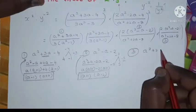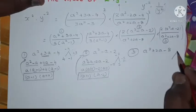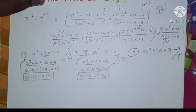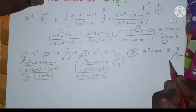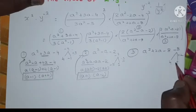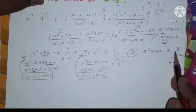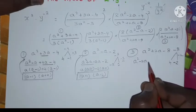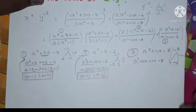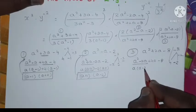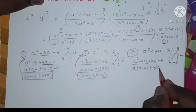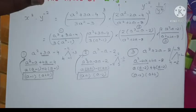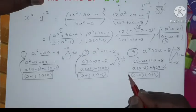The third polynomial is a² + 2a - 8. We need two numbers that multiply to -8 and add to +2: those are +4 and -2. So we split +2a as -2a + 4a, giving a(a - 2) + 4(a - 2), which factors as (a - 2)(a + 4).